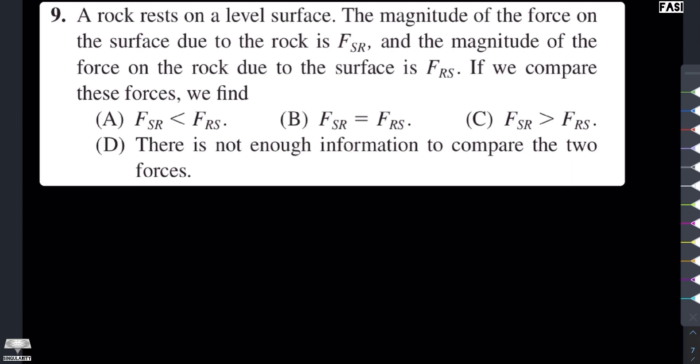If we compare these forces, we find: option A is FSR is less than FRS, option B is FSR is equal to FRS, option C is FSR is greater than FRS, and option D is there is not enough information to compare the two forces.